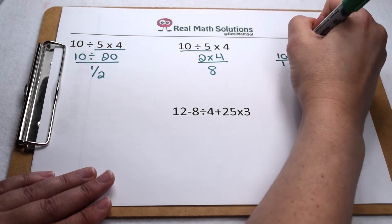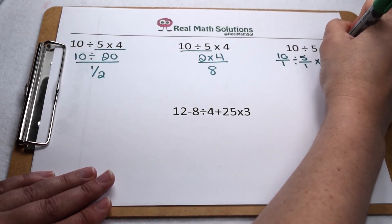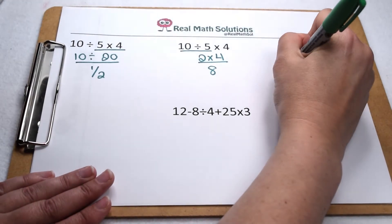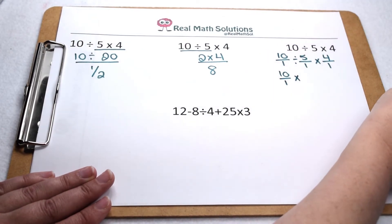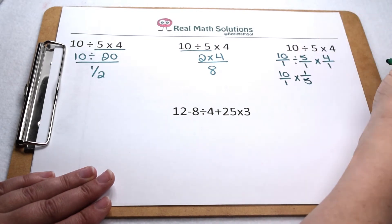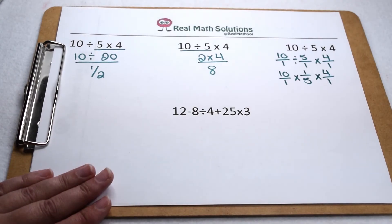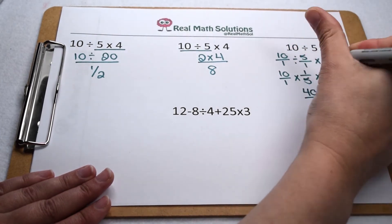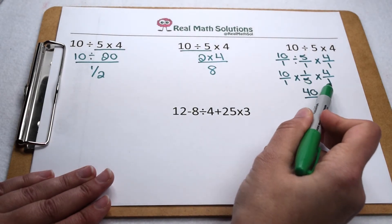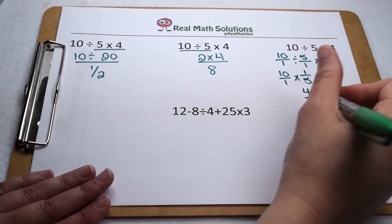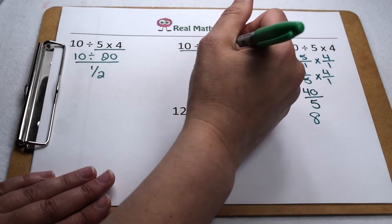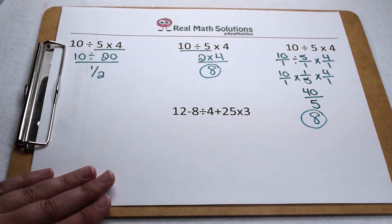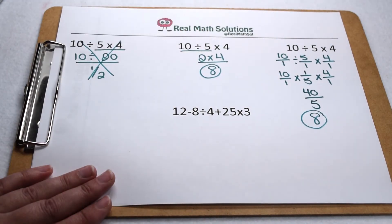When I change it all to fractions, that gives me 10 over 1 divided by 5 over 1 times 4 over 1. Dividing is really multiplying by the reciprocal, so 10 over 1 stays the same, division becomes multiplication, the reciprocal of 5 over 1 is 1 fifth, and then we'd still have 4 over 1. Multiplying through the numerators: 10 times 1 is 10, and 10 times 4 is 40. Multiplying through the denominators: 1 times 5 is 5, and 5 times 1 is 5, so I have 40 over 5. Simplifying 40 over 5 gives me 8. That means working from left to right gives the same result as multiplying by the reciprocal, and both are very different from multiplying before dividing.